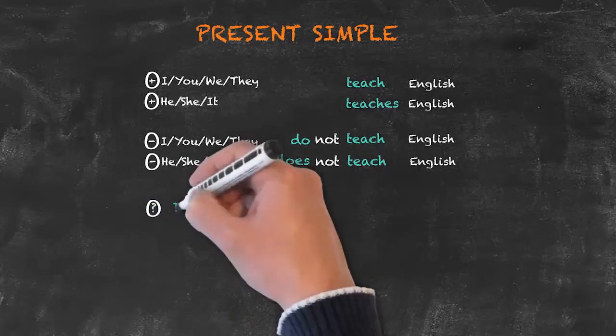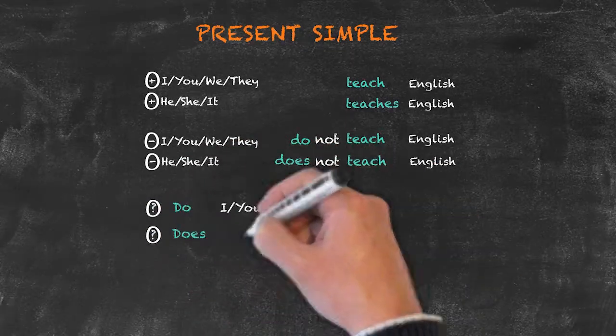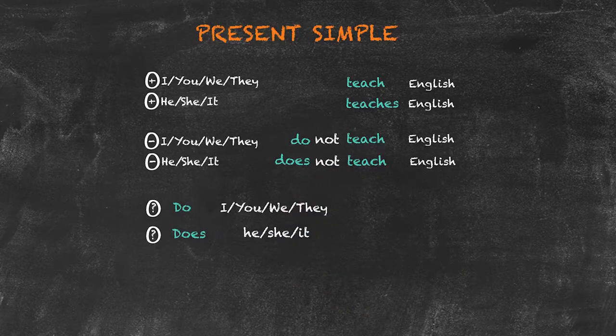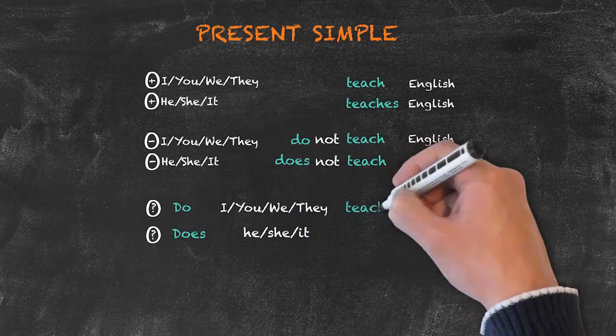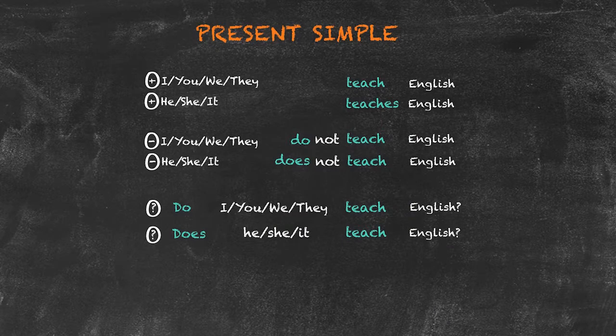Of course, again, we use do for I, you, we, and they, and use does for he, she, and it. In both cases, we've left our verb form as the base form of the verb as there's no need to change it.